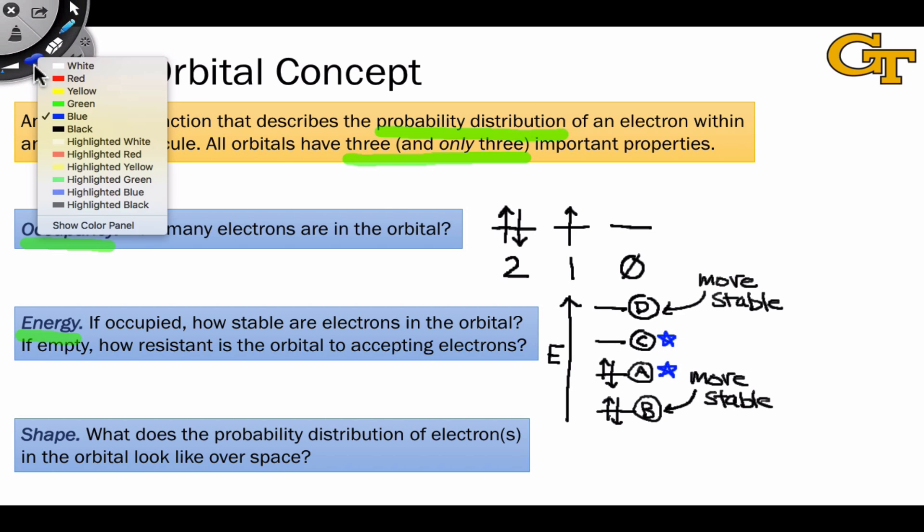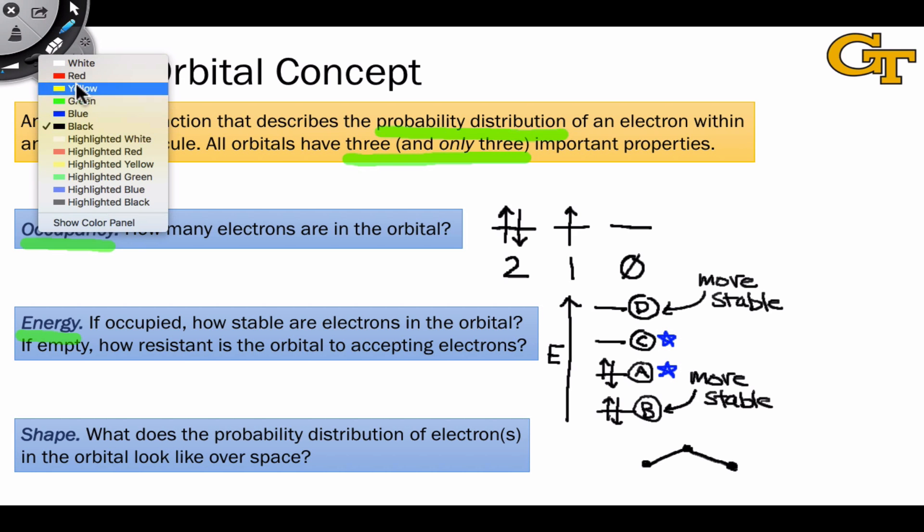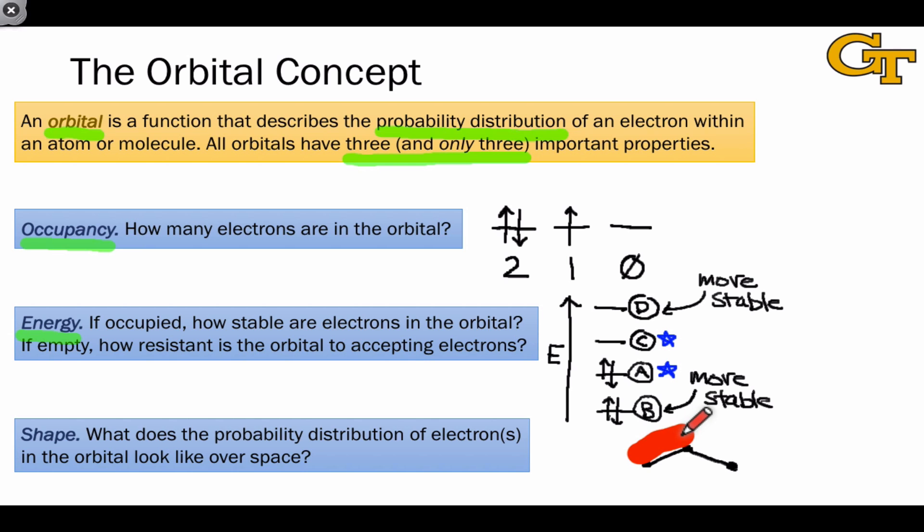The final property we need to consider, which can be the most complicated visually, is the shape. The shape is simply the shape of the probability distribution function over space. This is a function of three dimensions, so it's difficult to represent. The way we typically do this is on a picture of the molecule using blobs or lobes inside of which electrons are likely to reside if the orbital is filled, or where electrons are likely to go for an unfilled orbital. For example, we can imagine an orbital shape that looks something like this with one lobe of one color above this hypothetical molecule and a lobe of another color below. Inside these lobes we're likely to find electrons, and the colors represent the signs of the wave function. A negative probability doesn't make sense, but the sign is important for combinations of orbitals. When we start overlapping them with each other, the signs become important.